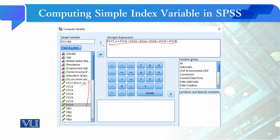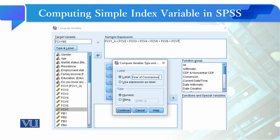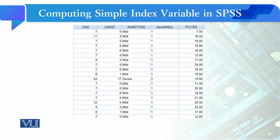You will use all of the items and add a sign and target variable name FCV19S. You can enter the name, then click the button, and then label the variable as Fear of Coronavirus. Then click the tab and execute the command to get a new variable.